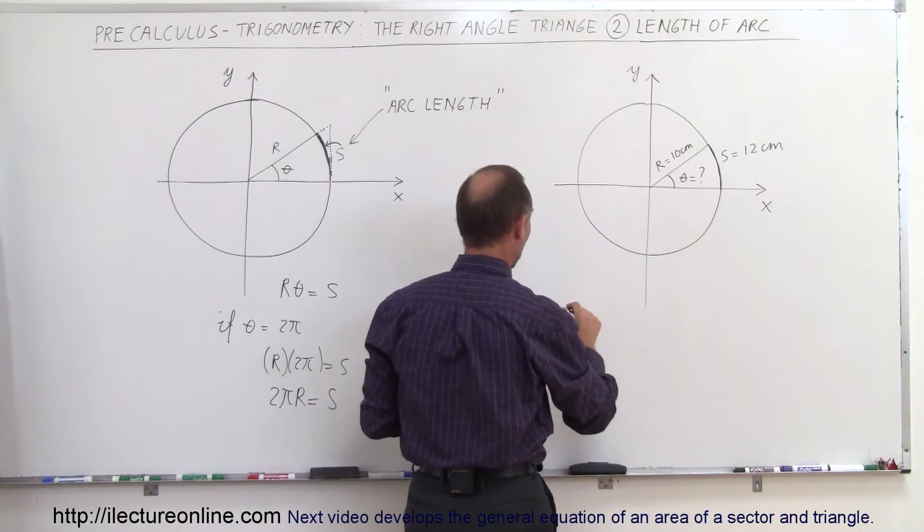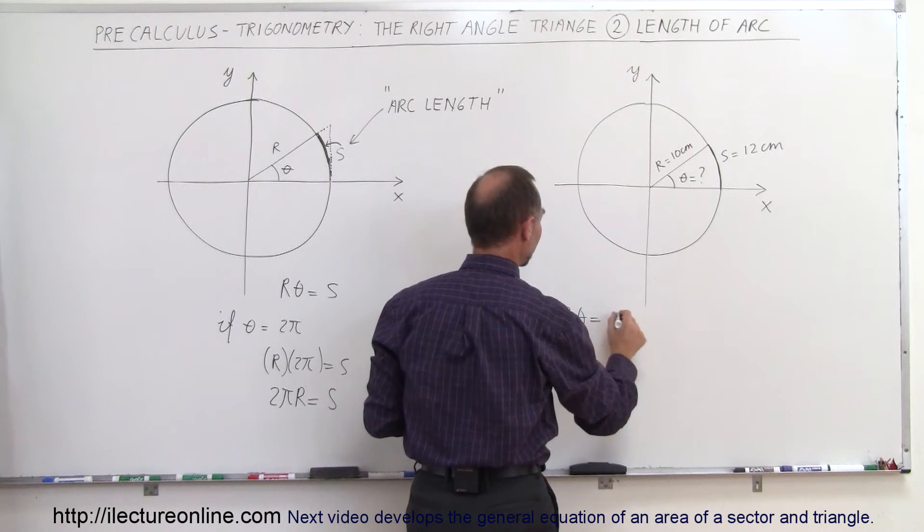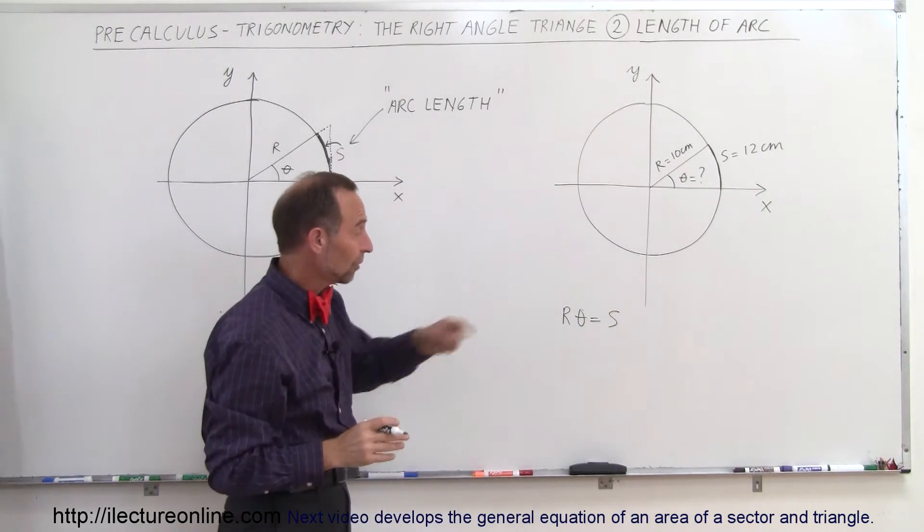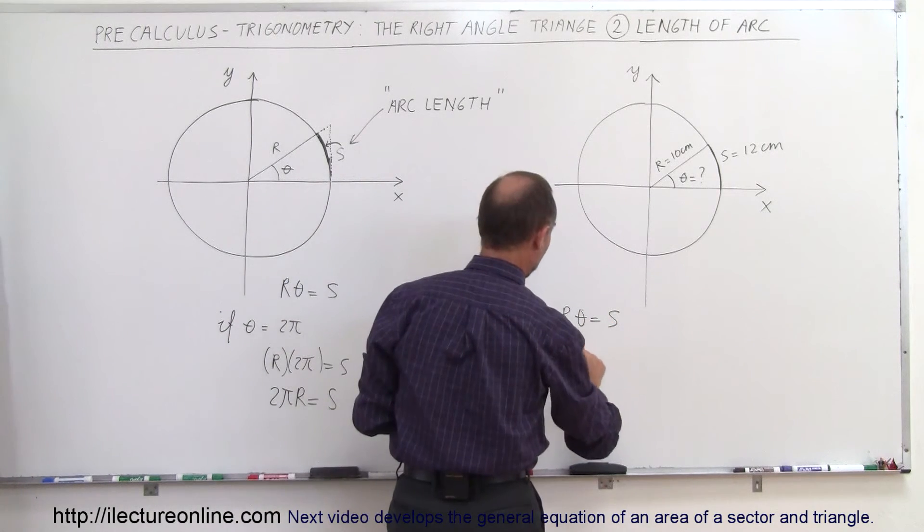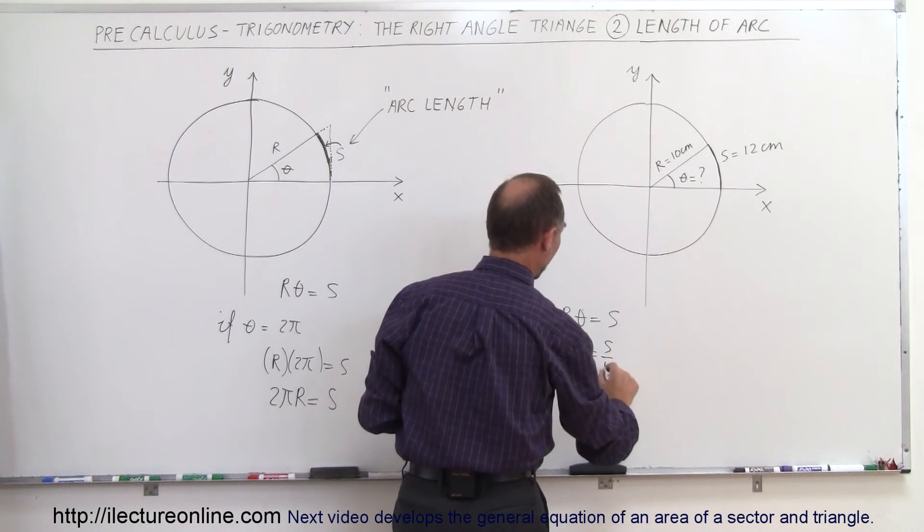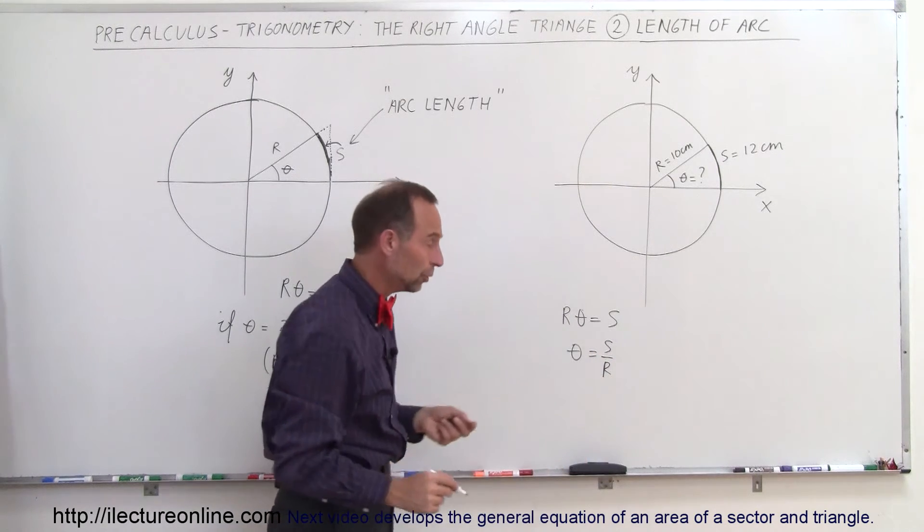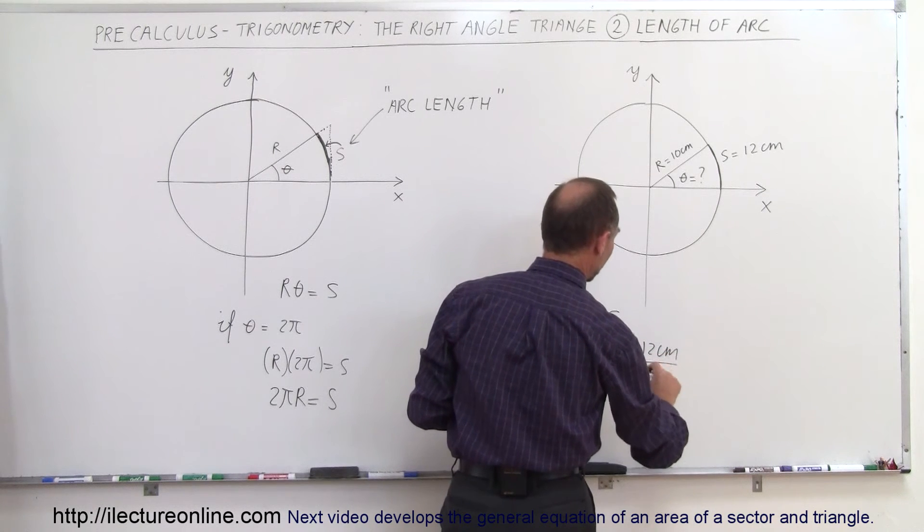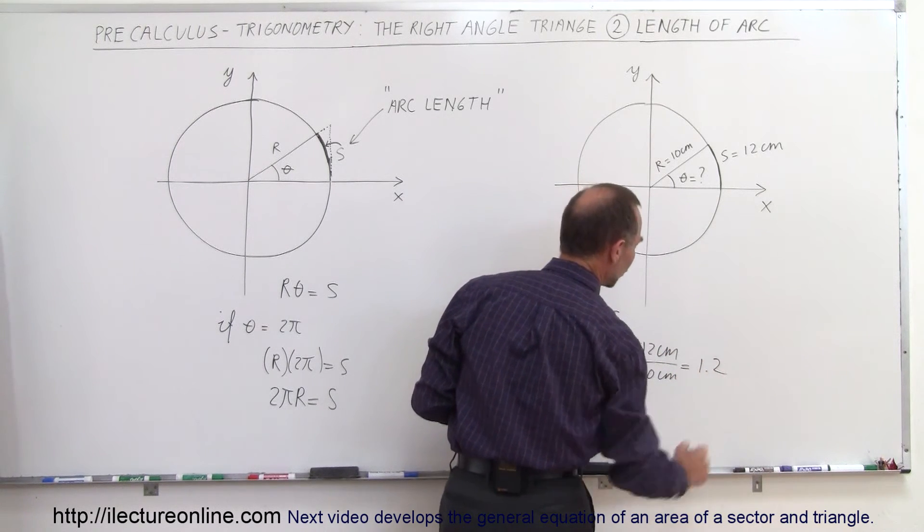So there you would say that R times theta equals S. I always like to write down the original equation, and now we're going to solve this for theta. So therefore theta equals S divided by R. So it's simply the ratio between the two. In this case the arc length is 12 centimeters, the radius is 10 centimeters, so it equals 1.2.